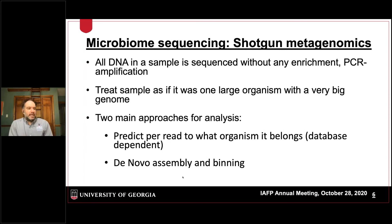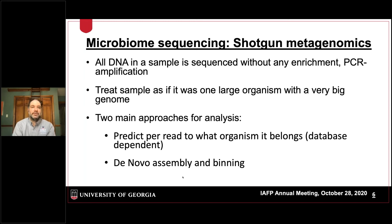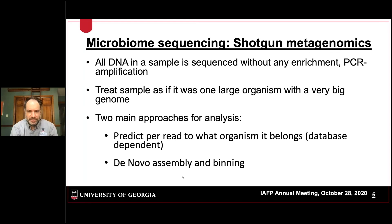The other major way of sequencing microbiomes is shotgun metagenomics. In that case, all DNA in a sample is sequenced without any enrichment or PCR amplification. You treat the sample as if it were one large organism with a very large genome — one that consists of multiple genomes of microorganisms.